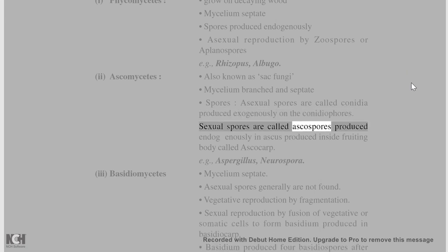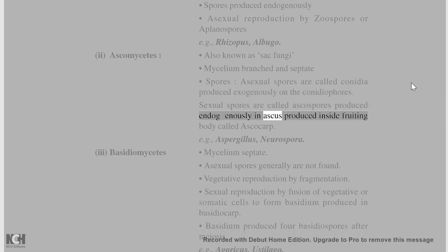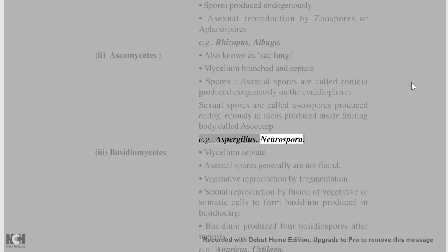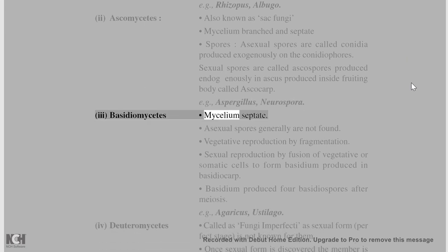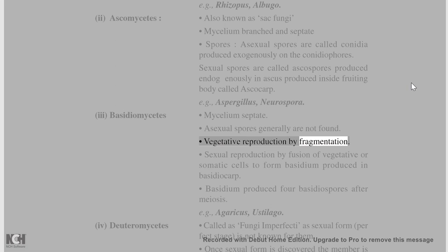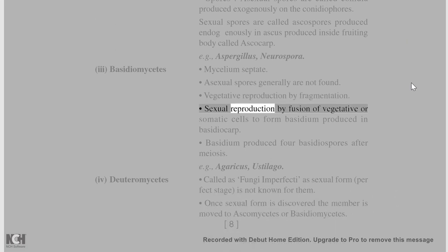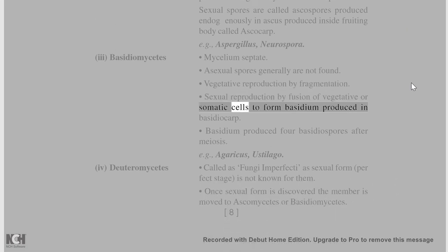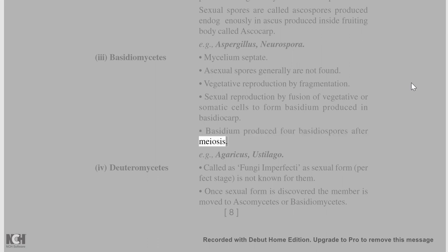Sexual spores of Ascomycetes are called ascospores, produced endogenously in an ascus inside a fruiting body called ascocarp, e.g., Aspergillus, Neurospora. Basidiomycetes have septate mycelium. Asexual spores are generally not found; vegetative reproduction occurs by fragmentation. Sexual reproduction by fusion of vegetative or somatic cells forms basidium, produced in basidiocarp, e.g., Agaricus, Ustilago.